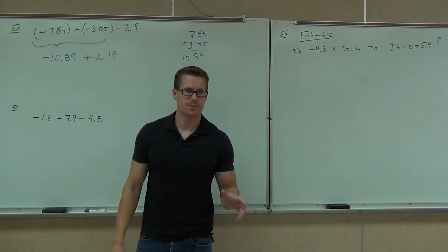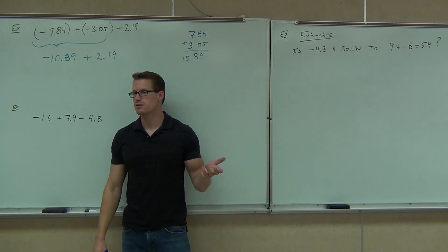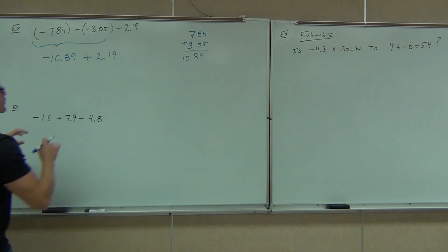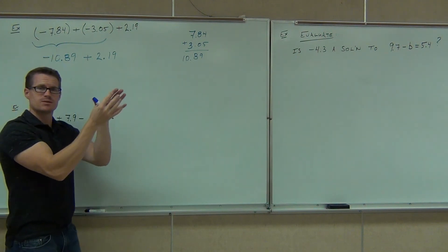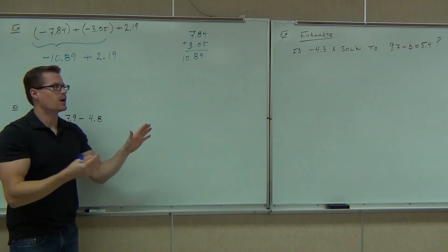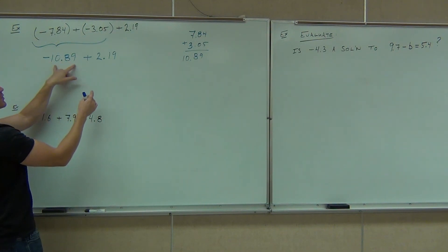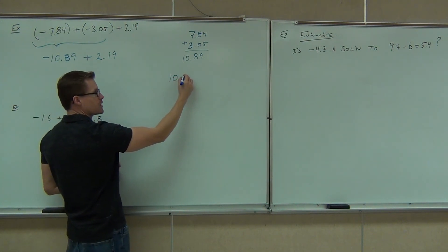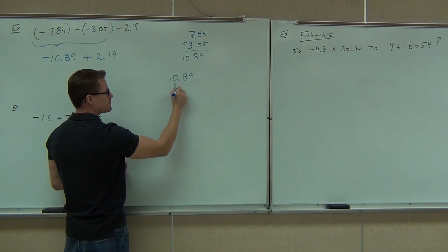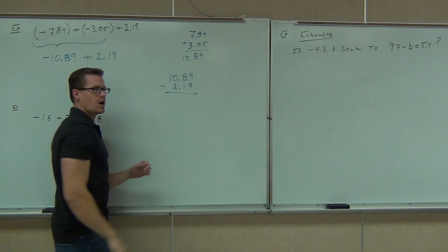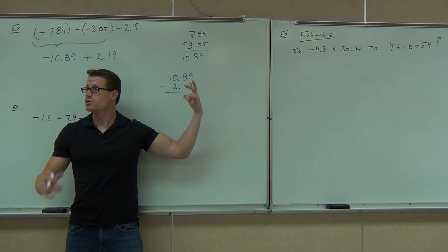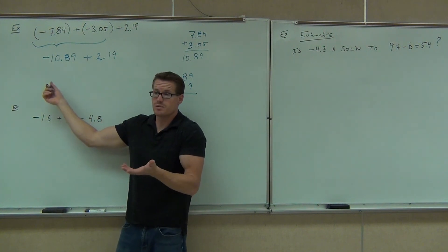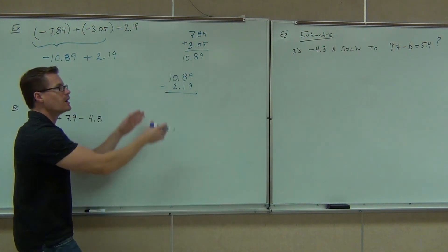Will the addition rule still work? Sure. Do we have the same sign or different signs now? Different. Are we going to add them or subtract them? Subtract — correct. So it's still going to work. We just have to know: same signs we add them, different signs we subtract them. Which one goes on top — 10.89 or 2.19? 10.89. For subtraction we do have to have the larger number on top. We subtract, and notice I don't need to worry about signs because the addition rule takes care of the signs. We know our answer is going to be negative — the bigger number is negative.